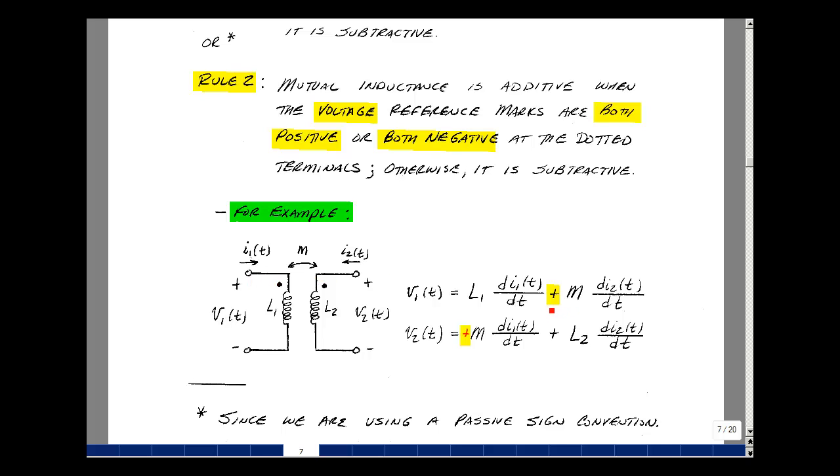So if both currents are entering the dot, the M term is positive. So you have a positive value here and a positive value here. I put a plus sign here just to emphasize this is positive. If you had this current entering and this one leaving, then this would be negative and this would be negative.